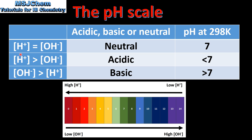If the hydrogen ion concentration is greater than the hydroxide ion concentration, the substance will be acidic and the pH at 298 K will be less than seven. And if the concentration of hydroxide ions is greater than the concentration of hydrogen ions, the substance will be basic and the pH at 298 K will be greater than 7.